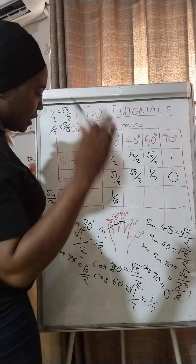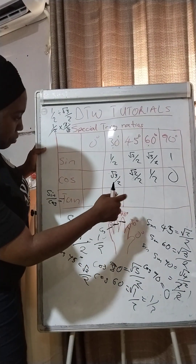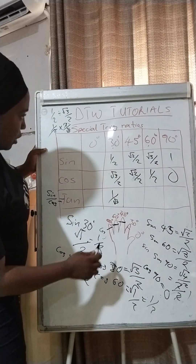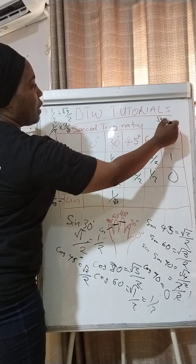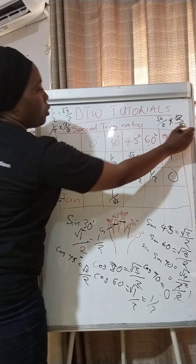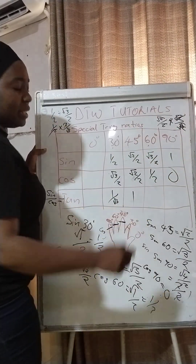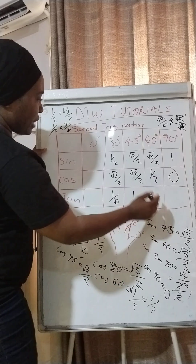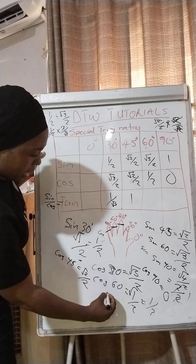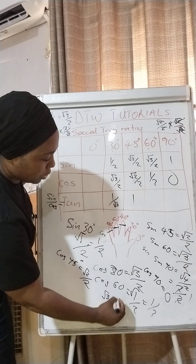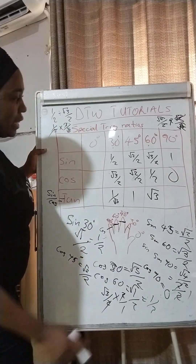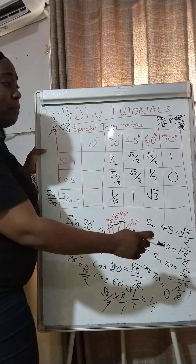What is tan 45? We divide sine 45 by cosine 45: root two over two divided by root two over two. When we multiply by the reciprocal they cancel completely, giving us one. So tan 45 is one. What is tan 60? We take sine 60 over cosine 60: root three over two divided by one over two, multiply by the reciprocal, the twos cancel, so tan 60 is root three. And tan 90 is one divided by zero, which is infinity.